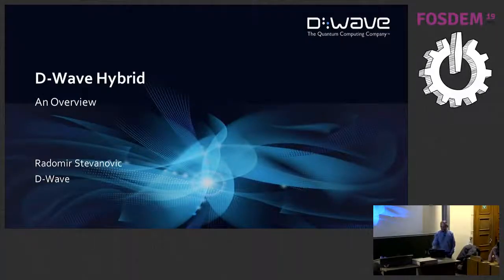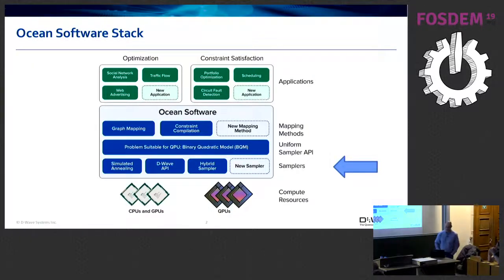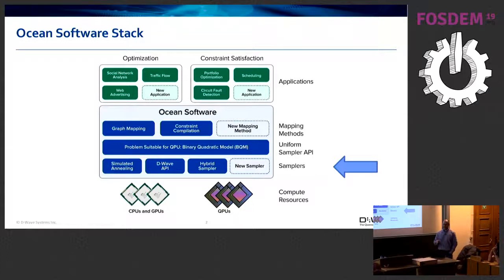Alex gave a nice overview of how to solve a problem on D-Wave's QPU and a nice overview of our Ocean SDK — how to map a specific application domain problem onto something we currently support, like graph mapping or constraint compilation, and then map that onto a BQM. When you have a BQM, you can use some of the samplers to solve them.